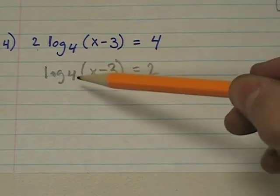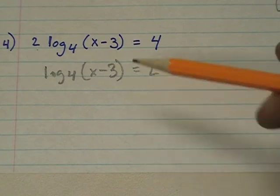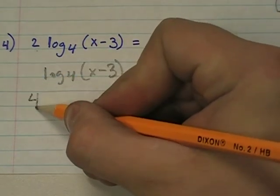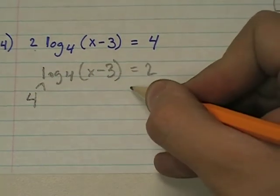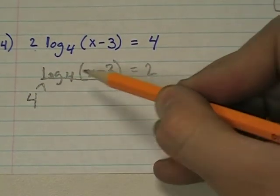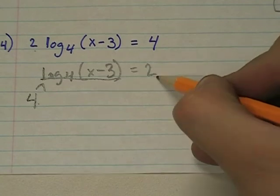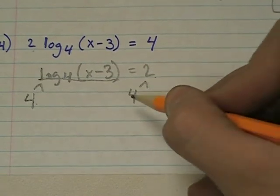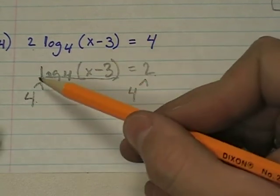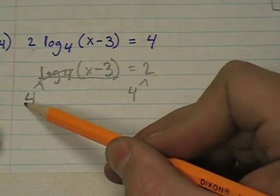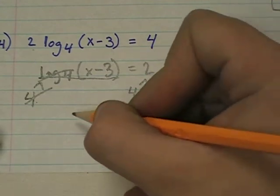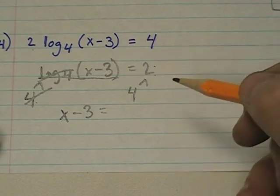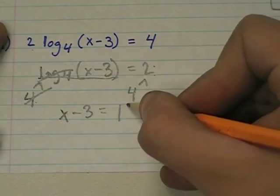Once you have a log isolated, you can always get rid of it by taking the anti-log. The anti-log of log 4 is to make it the exponent of 4. And if I make this side of the equation the exponent of 4, then I have to make this side the exponent of 4. So we have 4 to the second power, or 4 squared. What happens here? Remember, the log and the anti-log cancel, and I'm left with x minus 3 equals 4 squared. What is 4 squared? 16.